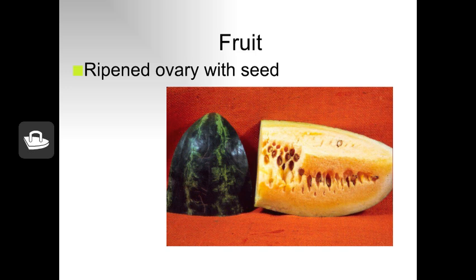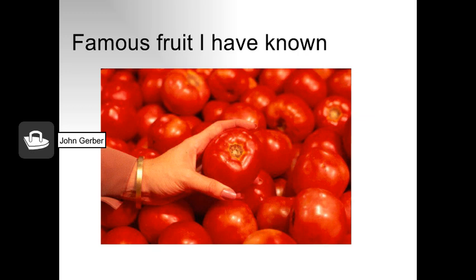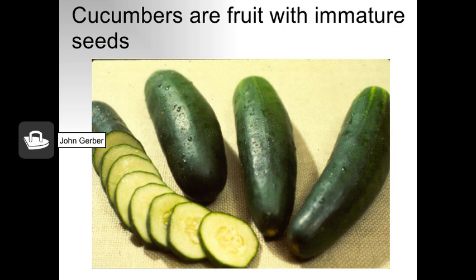In some fruits, seeds are enclosed within the ovary — like watermelon, apples, peaches, oranges, squash, and cucumbers. In other fruits, seeds are situated on the outside, like corn and strawberries. A tomato is a typical simple fruit, harvested fully mature for the best flavor. If you leave a cucumber unharvested, the seeds will develop and get hard and dry, and the fruit becomes bitter and not edible. We harvest cucumbers as immature fruits, unless we're saving seeds for next year.